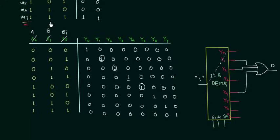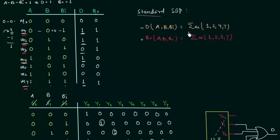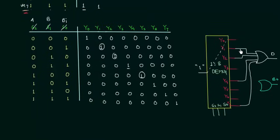Finally, when a=1, b=1, bi=1, the difference is 1, so y7 acts as the last input to the OR gate for difference. In the same way we implement the borrow output using another OR gate. Using the minterms 1, 2, 3, 7 for borrow output: we feed y1, y2, y3, and y7 as inputs to this OR gate. So this is how we implement the borrow output.